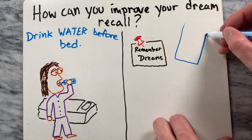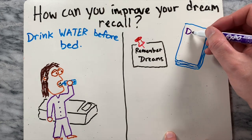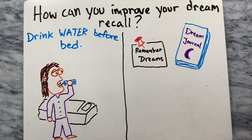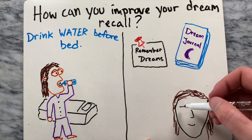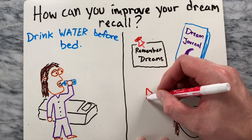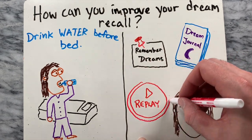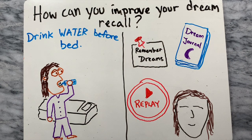Once in bed, repeatedly reminding yourself that you want to remember your dreams may increase your chances and so does keeping a dream journal. Lastly, when you wake up, hang on to that fragile dream memory. Keep your eyes closed, stay still, and replay the dream memory until your hippocampus catches up and properly stores the memory.